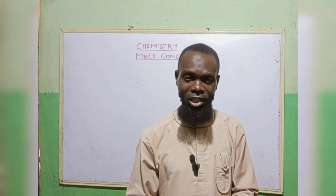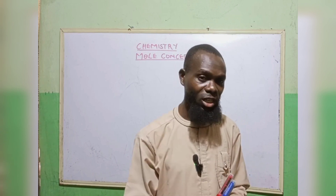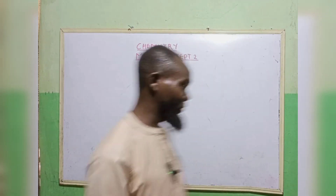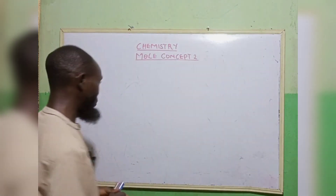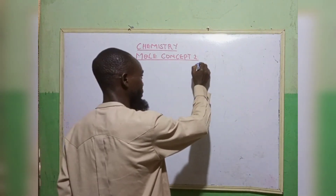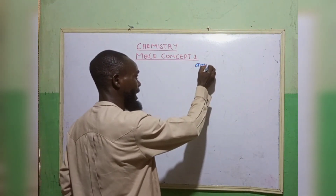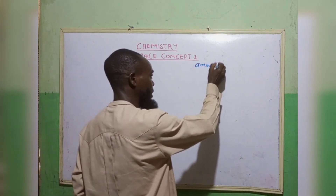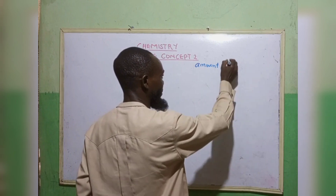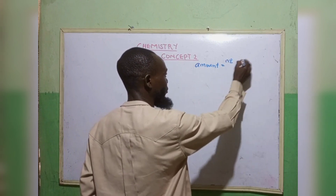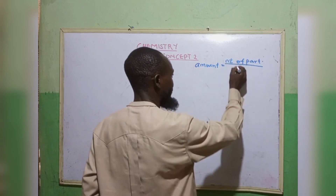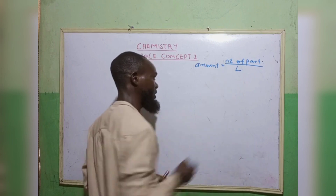Today we're going to be proceeding on the second formula — the second formula of mole — which says that amount is equal to number of particles divided by Avogadro's constant.